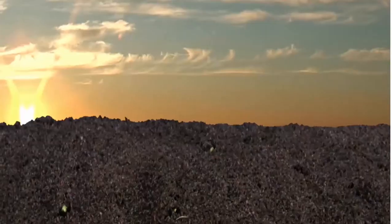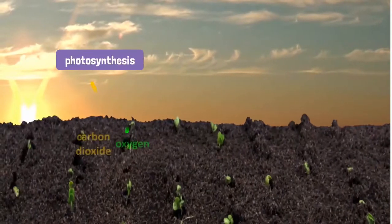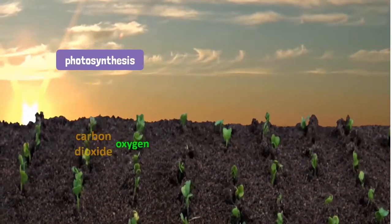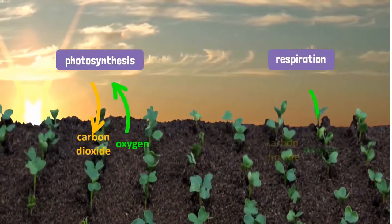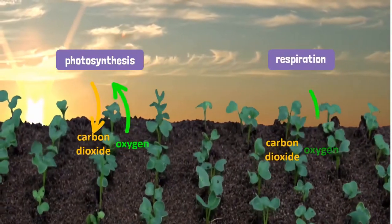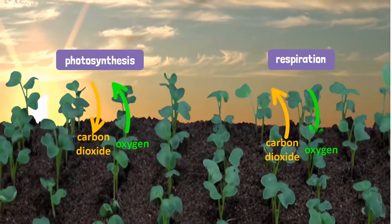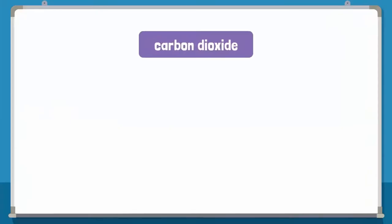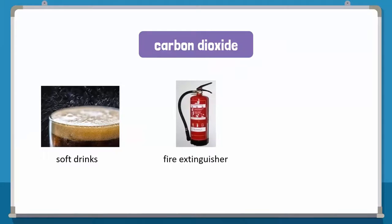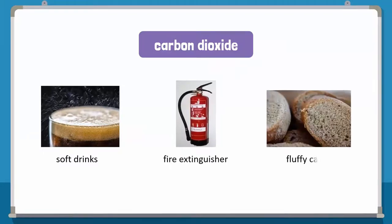Plants also breathe. But unlike us, they inhale carbon dioxide from the air to carry out the process of photosynthesis during the day. They also carry out respiration, in which they breathe in oxygen and exhale carbon dioxide. Carbon dioxide is used to create bubbles in soft drinks and in fire extinguishers. Cakes become fluffy when carbon dioxide is produced during baking.